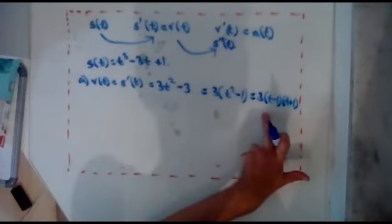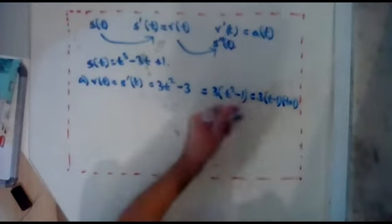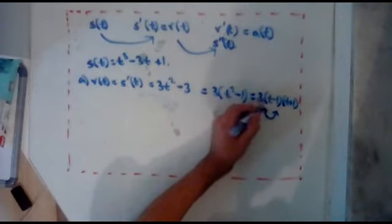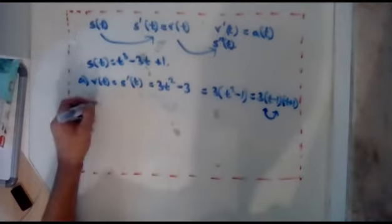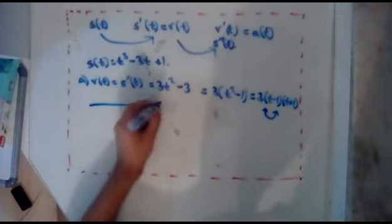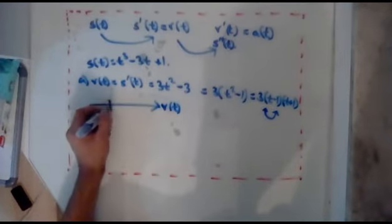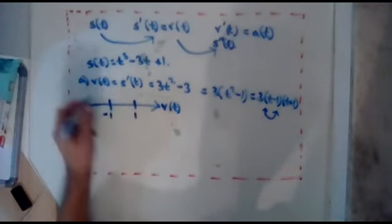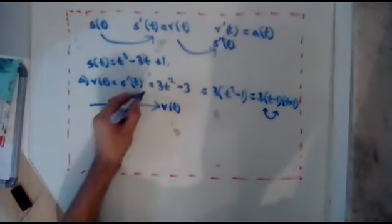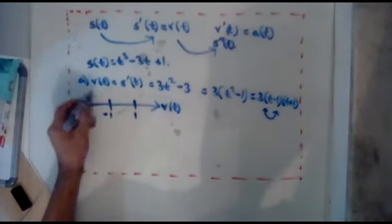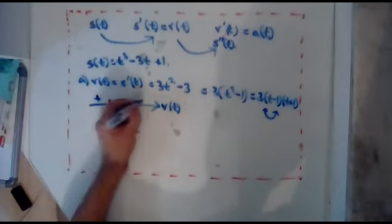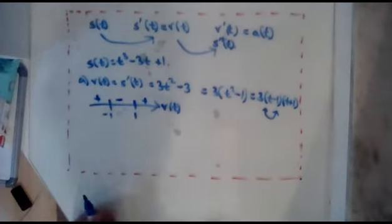So the sign diagram for that. It has zeros at 1 and minus 1. It's a positive quadratic, so it's going to go positive, negative, positive. It's going to go like that. So this is v of t. It's got minus 1 and 1. And as I say, it's positive quadratic, so it's going to be positive, negative, positive.